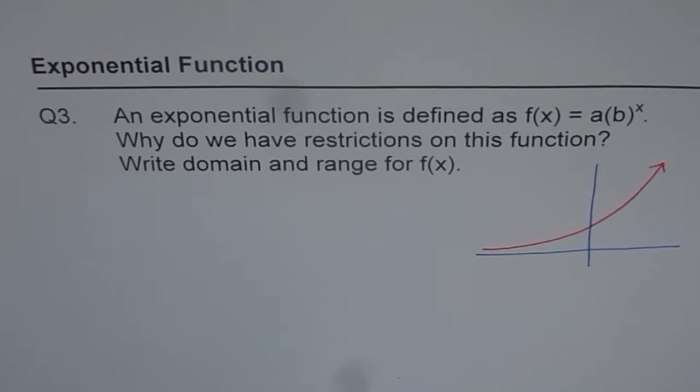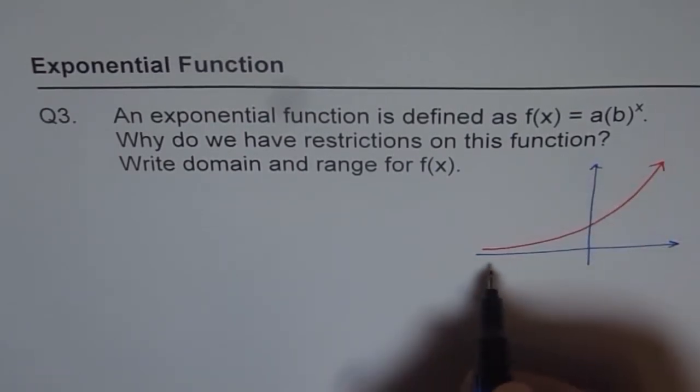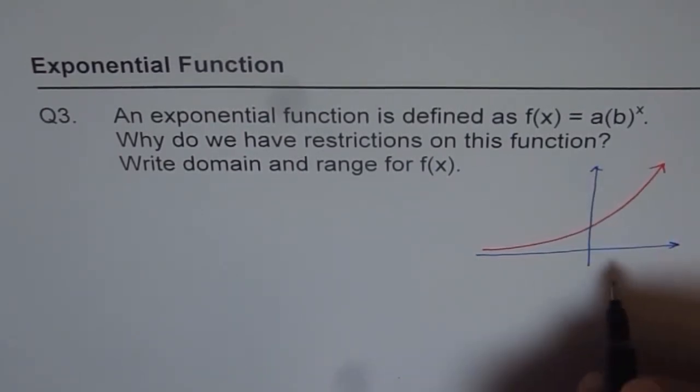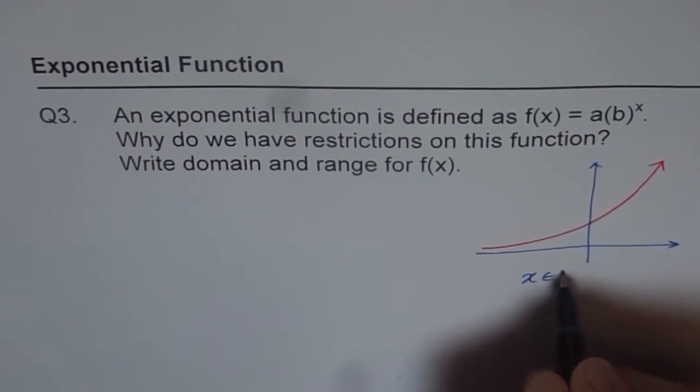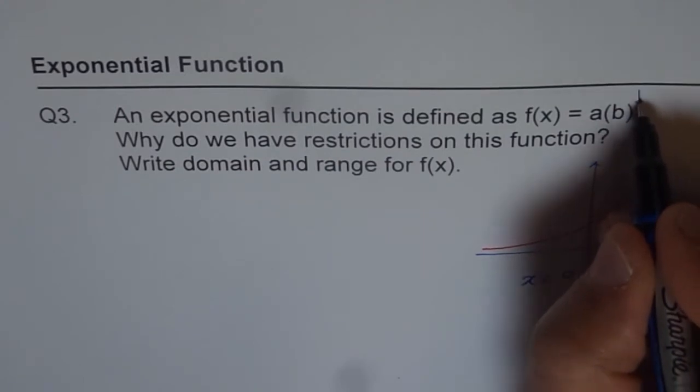Now the question is why do we have restrictions on this function? As you can see there are no restrictions on the domain of the function. So domain could be any number. x belongs to all real numbers. So what is the domain? Domain is x belongs to real numbers and there is no restriction on x, the domain. That means this value.